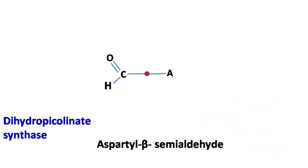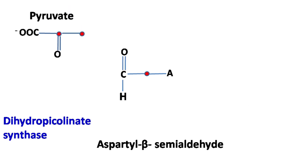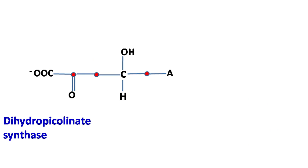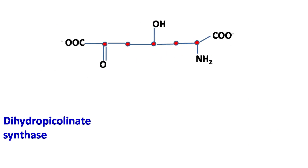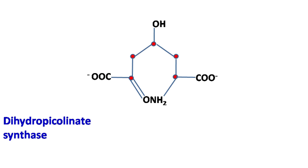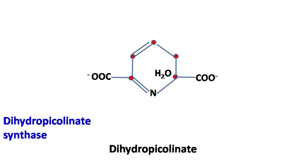Next, the enzyme dihydropicolinate synthase attaches a molecule of pyruvate to the aldehyde group of aspartyl beta semialdehyde. This results in the formation of dihydropicolinate.